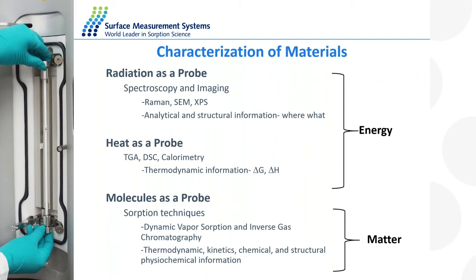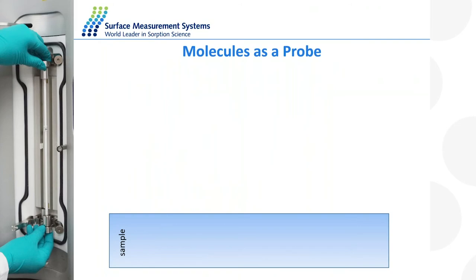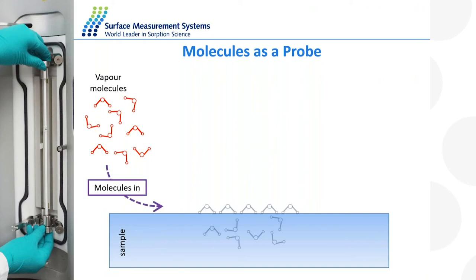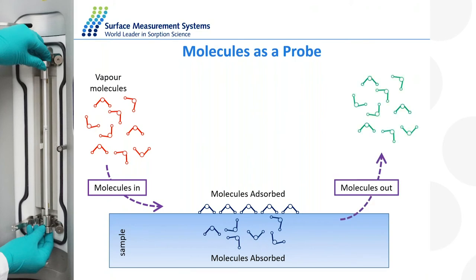We're going to encourage the use of molecules as a way of probing materials. Here we have a sample — a solid, which could be a powder, fibre, or gel — and we're going to expose that material to some vapour molecules. Vapour molecules generally want to interact with solids; there are strong adhesive forces and strong intermolecular potential. Some will adsorb on the surface, some may dissolve inside — we call those absorption — and in due course they will also leave the system.